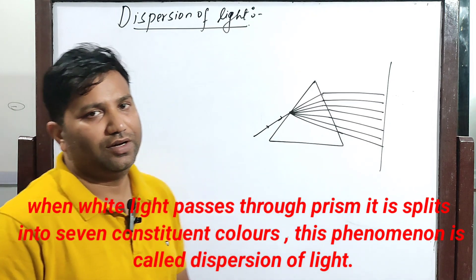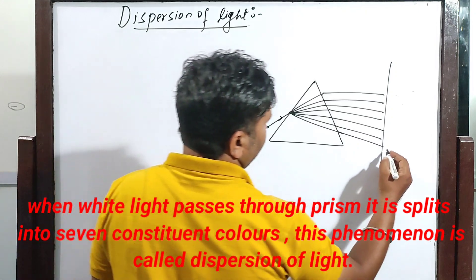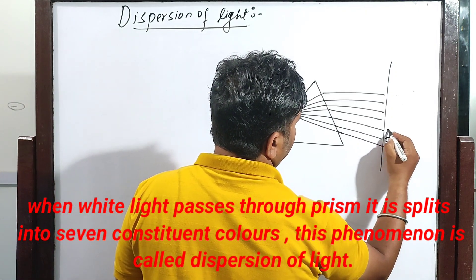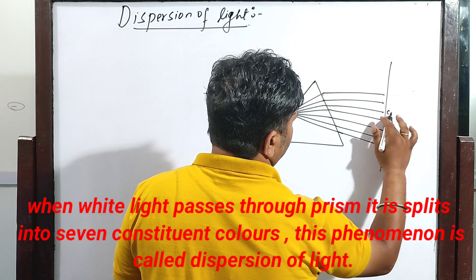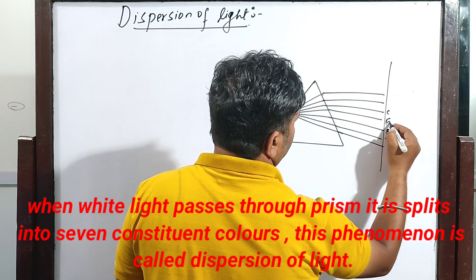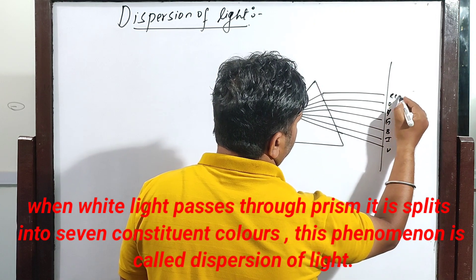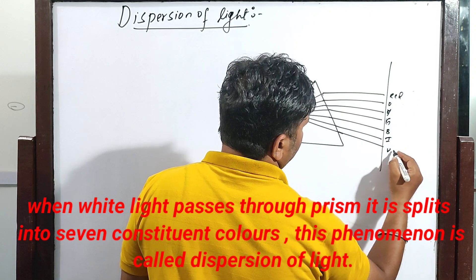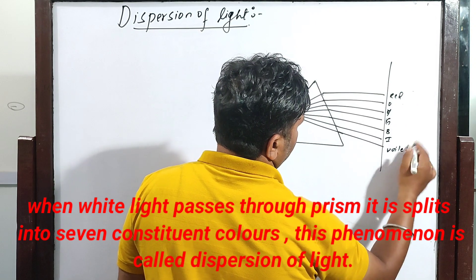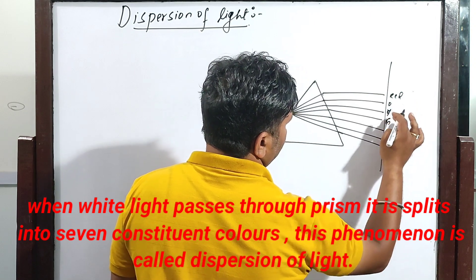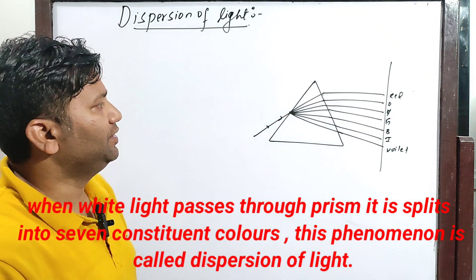When a white light passes through a prism it splits into seven constituent colors and this is known as dispersion of light. The seven colors are V, I, B, G, Y, O, and R — that is violet, indigo, blue, green, yellow, orange, and red.